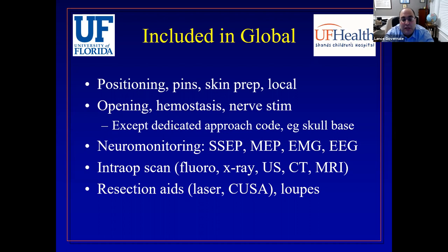Neuromonitoring is also included in the global. The neurosurgeon can't bill for SSEP, MEP, EMG, or EEG, but the provider reading it — sometimes a neurologist — can bill for providing the service. The neurosurgeon can't bill for using it. Similarly for intraoperative scanning: if you're using fluoro, you can't add a fluoro code. Resection aids — laser, ultrasound, the ultrasonic aspirator, and loops — are all included in the global period. None of this is separately billable for the neurosurgeon.